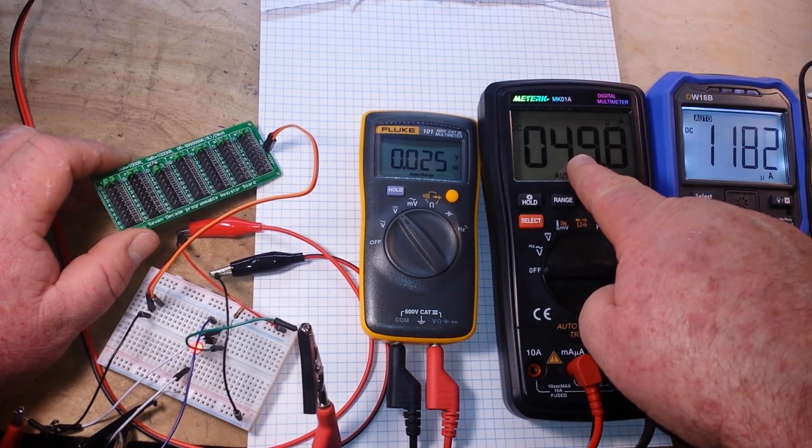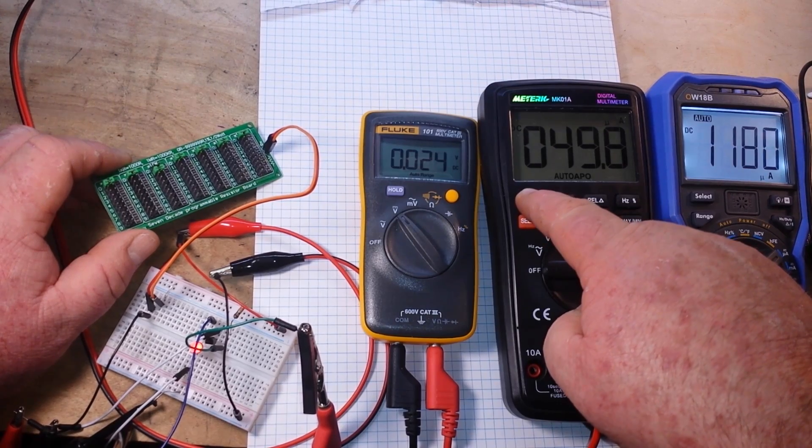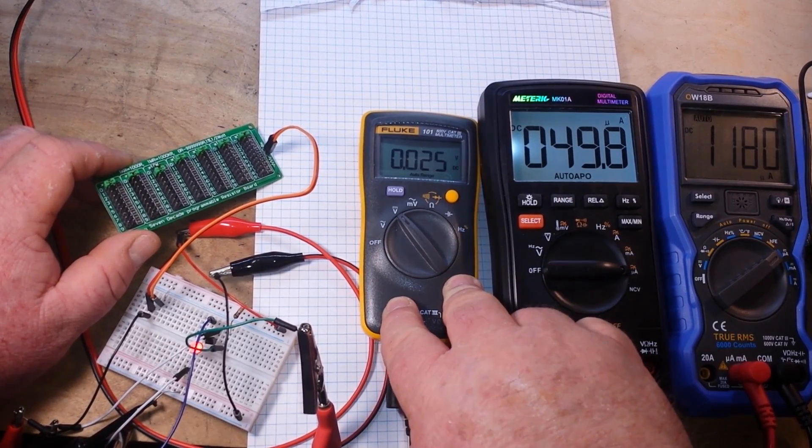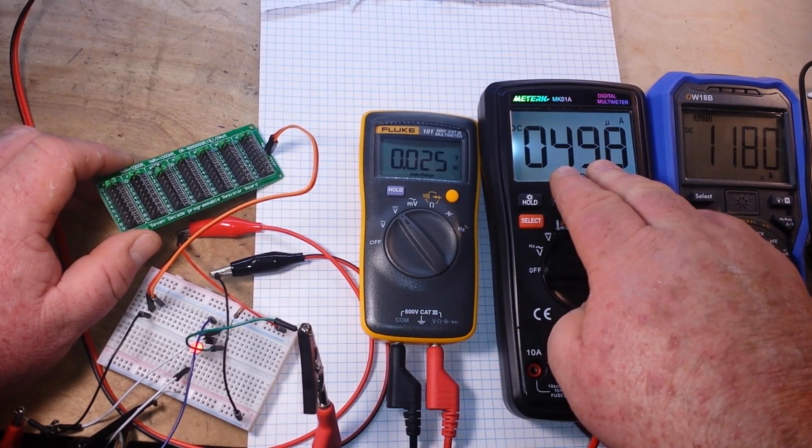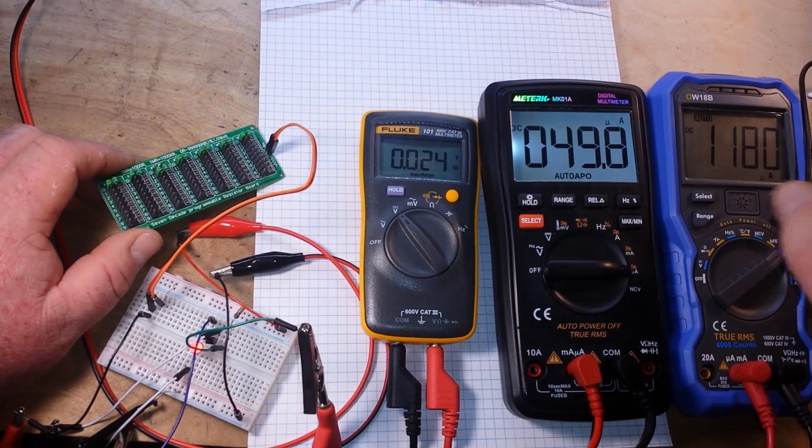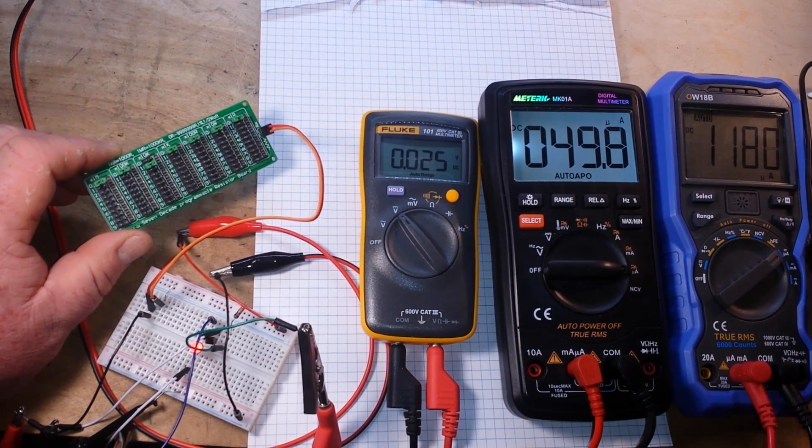Are you seeing the inverse relationship here between collector-emitter voltage and base current? And the direct relationship between base current and collector current?